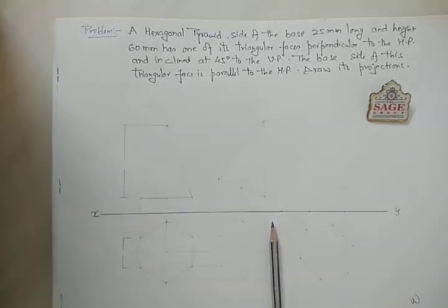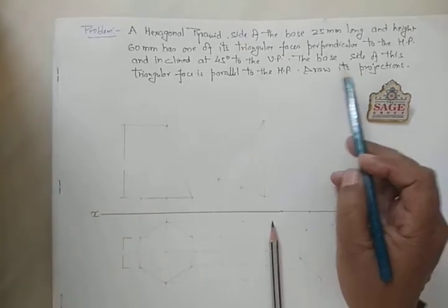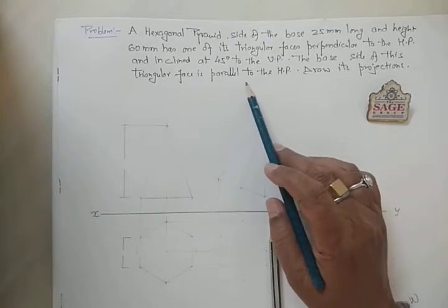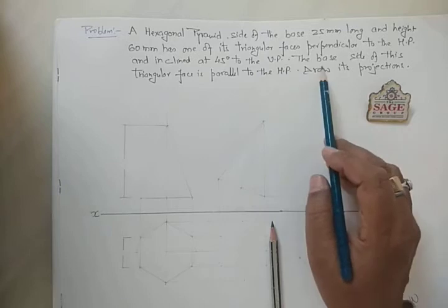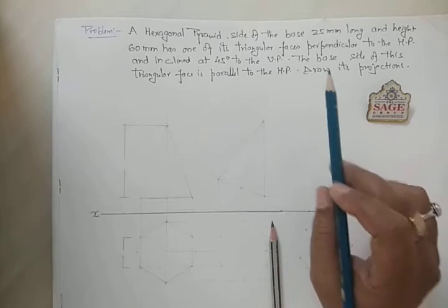Draw its projection. As I already told you, whenever we talk about the triangular face — if we want to keep a triangular face with respect to the HP, we should start with the top view, and the base will be with the side concept so that in the front view we can get the face of the pyramid. In this case, the base side of that triangular face is parallel to the HP, so I will keep the face parallel to the HP, not on the HP — that is the basic difference.